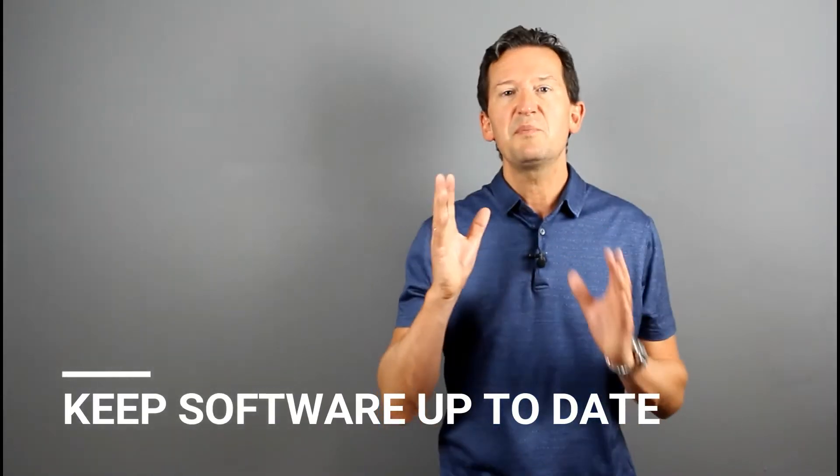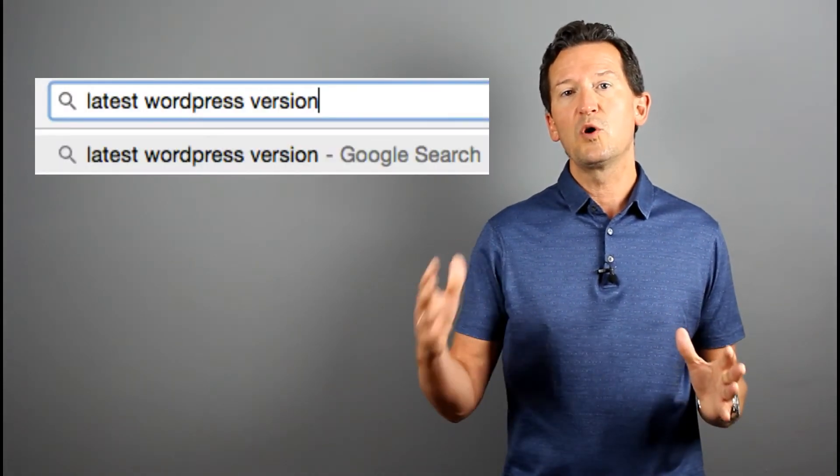Okay, number two, keep your website software up to date. Now this one is a really common issue. Let's say that you're using a content management system like WordPress to build your website. It just needs to be kept up to date. You can find the latest version on the website of the software that you're using. So for example, just search on latest WordPress version in Google. And if you're using plugins, they need to be updated too. Cost to fix? Zero. The only thing you need to take into account is that if you're not a technical person, just ask your hosting company for help. Otherwise, a developer can do it for you.